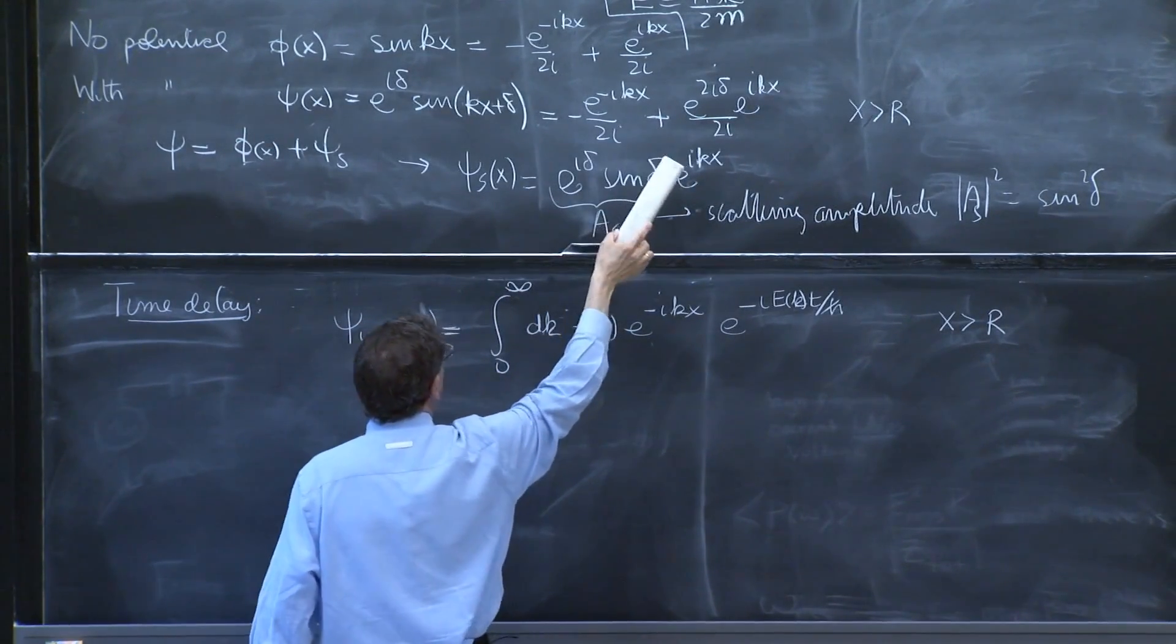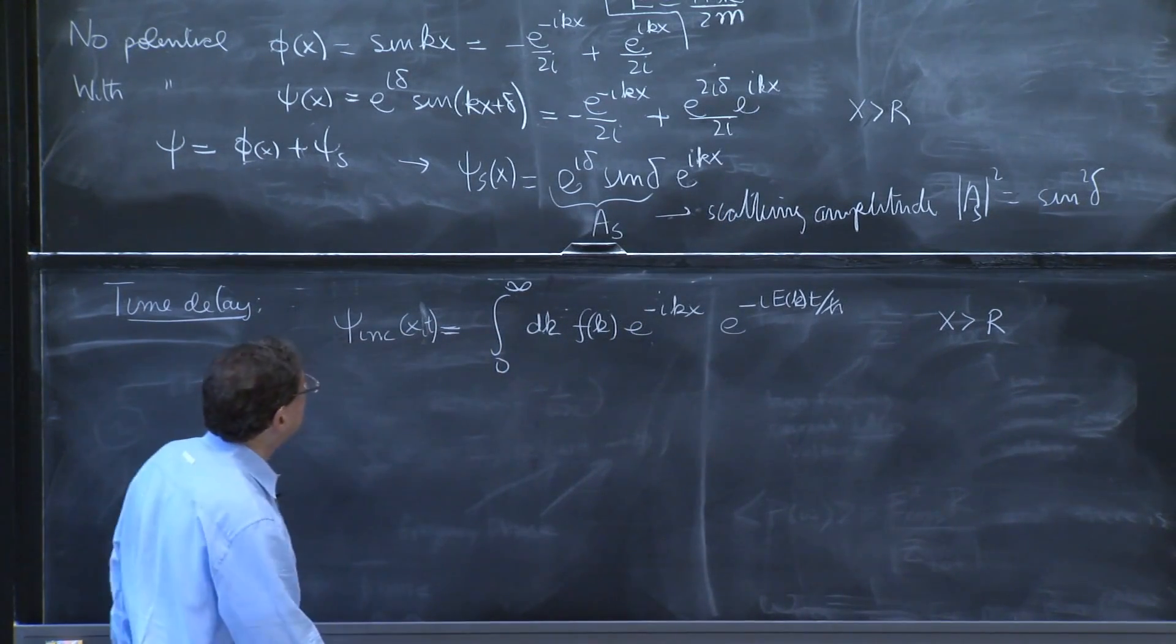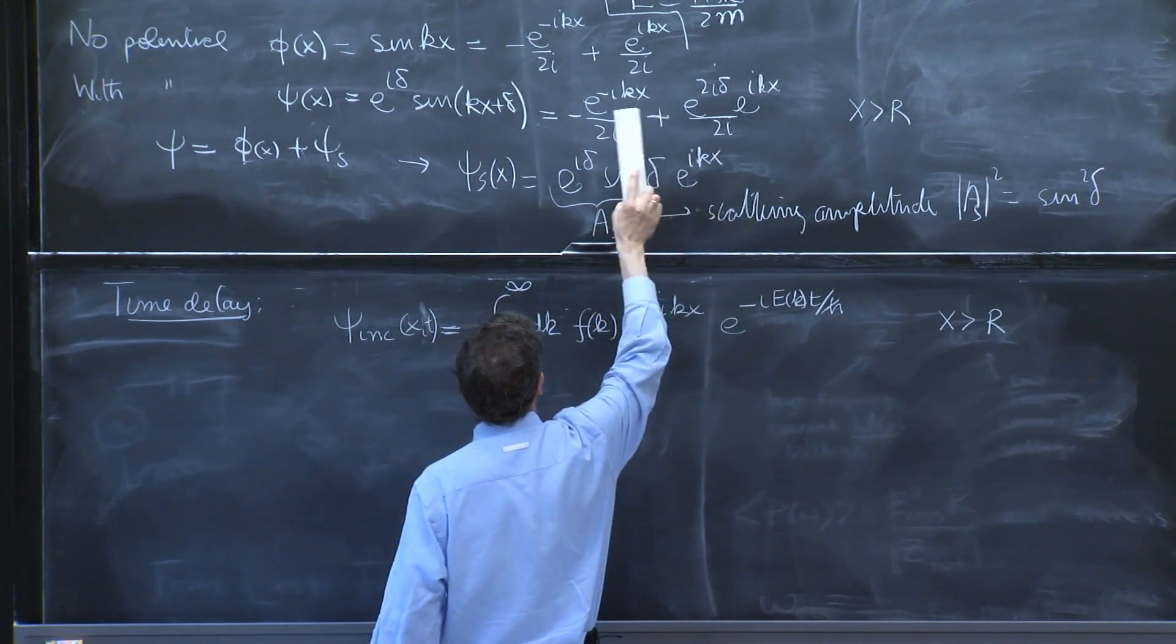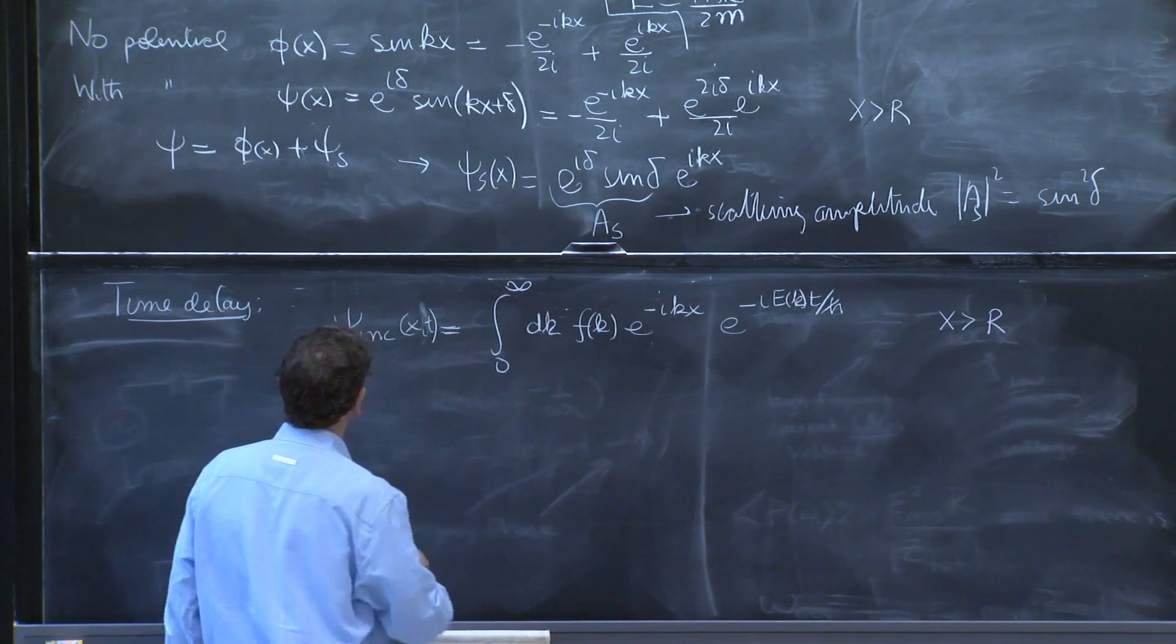The general solution of the Schrodinger equation in this simple region, the outside region, is of this form. And it depends on this delta that must be calculated.